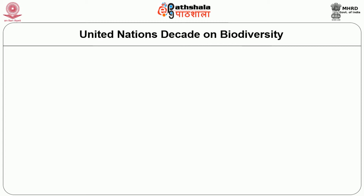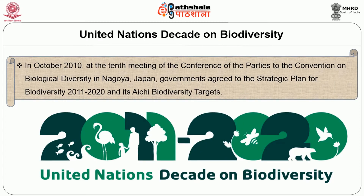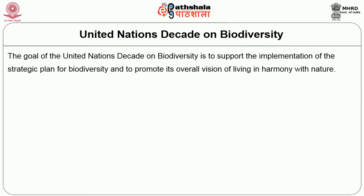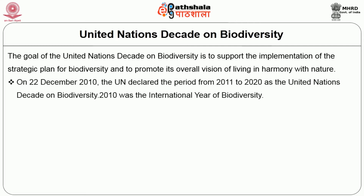At the 10th meeting of the Conference of Parties to the Convention on Biological Diversity in Nagoya, Japan in October 2010, the parties agreed to the Strategic Plan for Biodiversity 2011–2020 and its Aichi Biodiversity Targets. The goal of the United Nations Decade on Biodiversity is to support the implementation of this strategic plan and promote its overall vision of living in harmony with nature. On 22nd December 2010, the UN declared the period from 2011 to 2020 as the United Nations Decade on Biodiversity. 2010 was the International Year of Biodiversity.